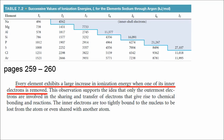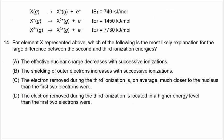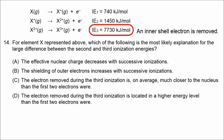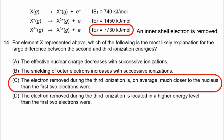That huge increase in ionization energy is the result of an inner shell electron being removed. Element X probably only has two valence electrons. Since those are in the outer shell, the next electron removed comes from an inner shell, much closer to the nucleus. So the correct answer is that the electron removed during the third ionization is, on average, much closer to the nucleus, making it much more difficult to remove.